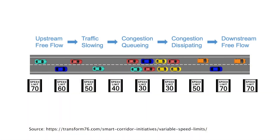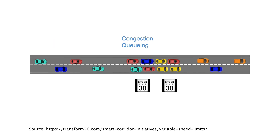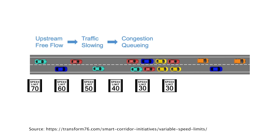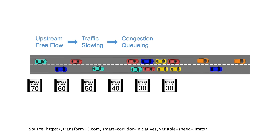VSL is used to inform the drivers of the downstream traffic conditions. For example, VSL will post a smooth speed profile at the upstream of the congestion tail to help drivers prevent a sudden brake. After the congestion, the VSL will increase the speed limit to encourage a higher driving speed.